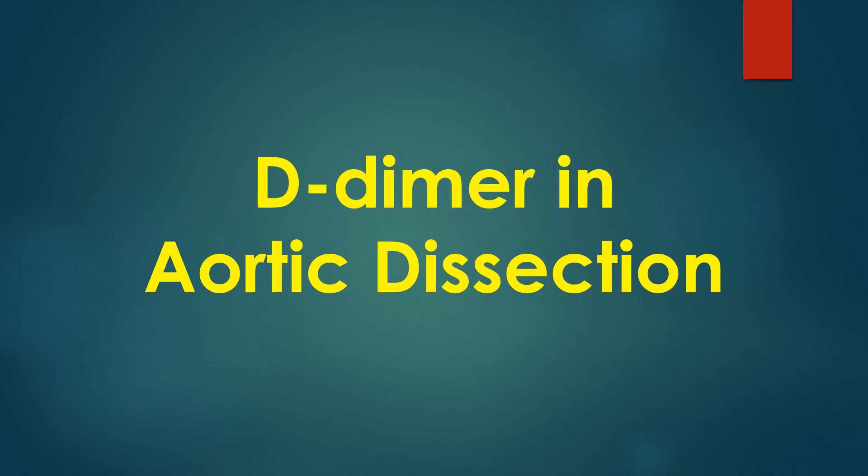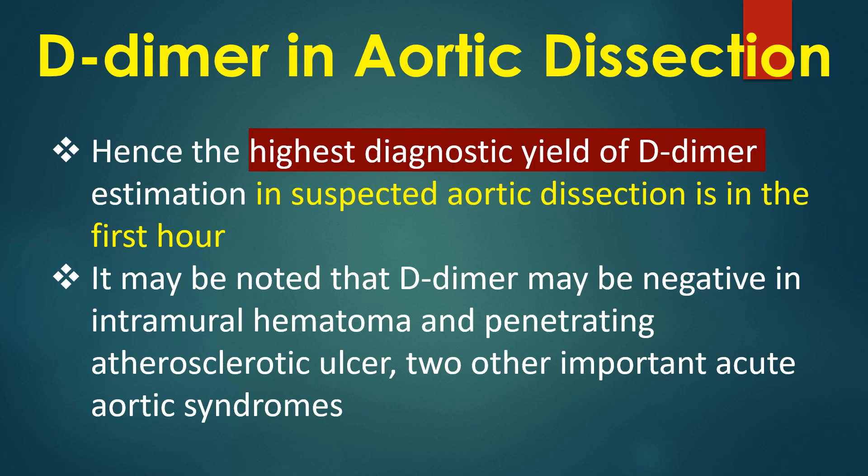D-dimer elevation in aortic dissection is distinctive in that levels are very high immediately after the dissection, while in most other disorders associated with D-dimer elevation the levels rise gradually. Hence, the highest diagnostic yield of D-dimer estimation in suspected aortic dissection is in the first hour. Notably, D-dimer may be negative in intramural hematoma and penetrating atherosclerotic ulcer.